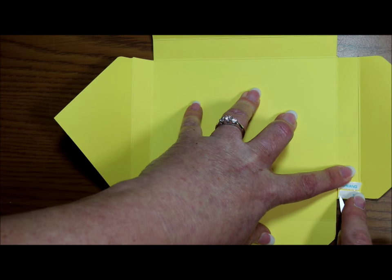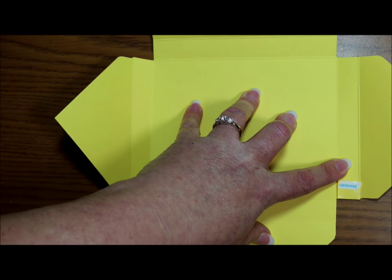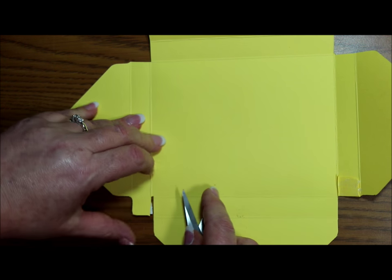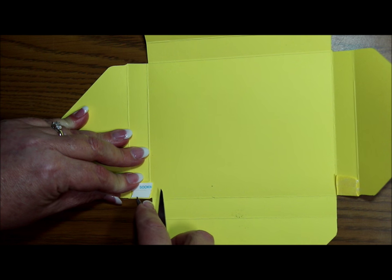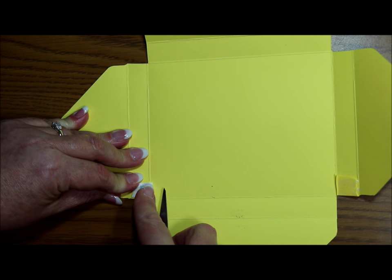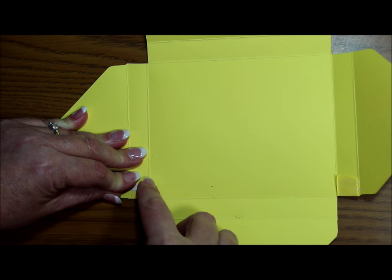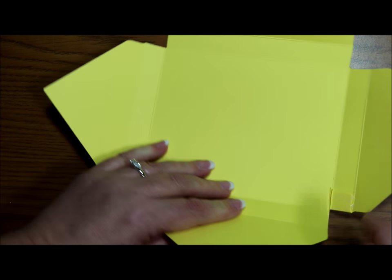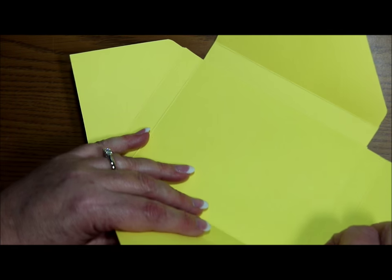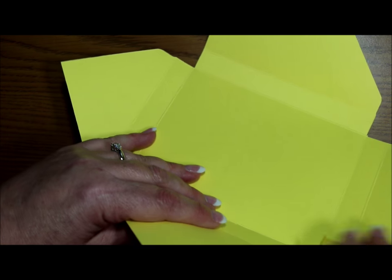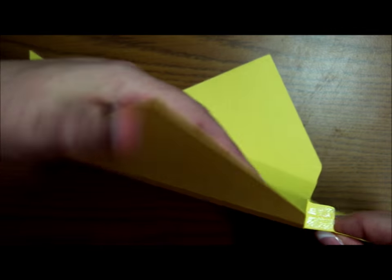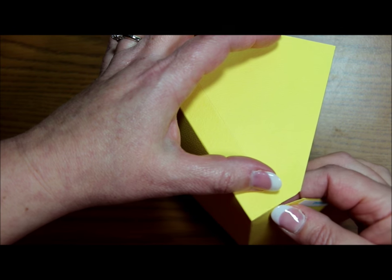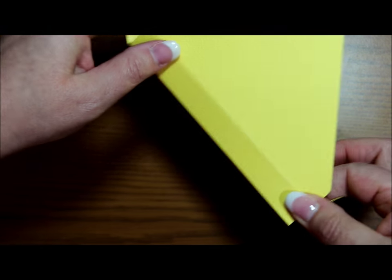So I'm going to begin by removing my sticky strip liner from my little tabs on the corners. And I'll do both of those. And you know, this project is simple enough where you could actually practice with some scrap paper to make sure that you're comfortable with this before you attempt it with your nice paper.